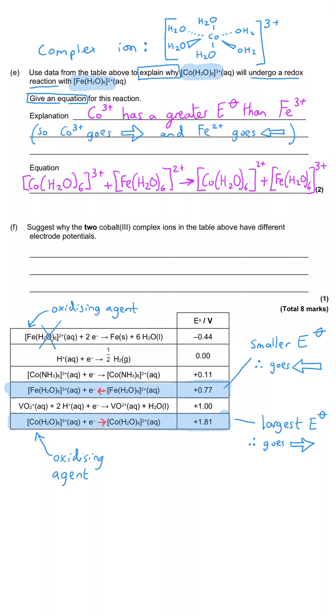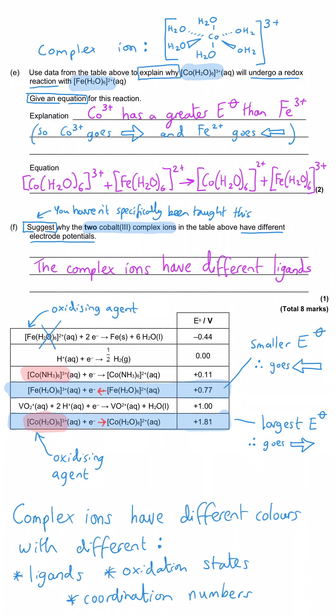The last part of this question asks why the two cobalt(III) complex ions in the table have different electrode potential values. The two species are Co(NH₃)₆³⁺ and Co(H₂O)₆³⁺. Quite simply, the cobalt 3+ has different ligands — ammonia versus water — and with different ligands the complex will have a different colour and different electrode potential.